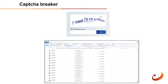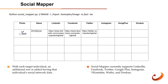Captcha breaker: a CAPTCHA is a system intended to prevent automated access or scraping by asking questions meant to recognize whether the user is a human or a program. A captcha breaker processes a CAPTCHA dataset to make it amenable to training a machine learning model. Social mapper is an OSINT tool that allows you to correlate the multitude of social media profiles of a target using facial recognition. By combining name search with image recognition, social mapper can eliminate false positives, saving the social engineer valuable time.